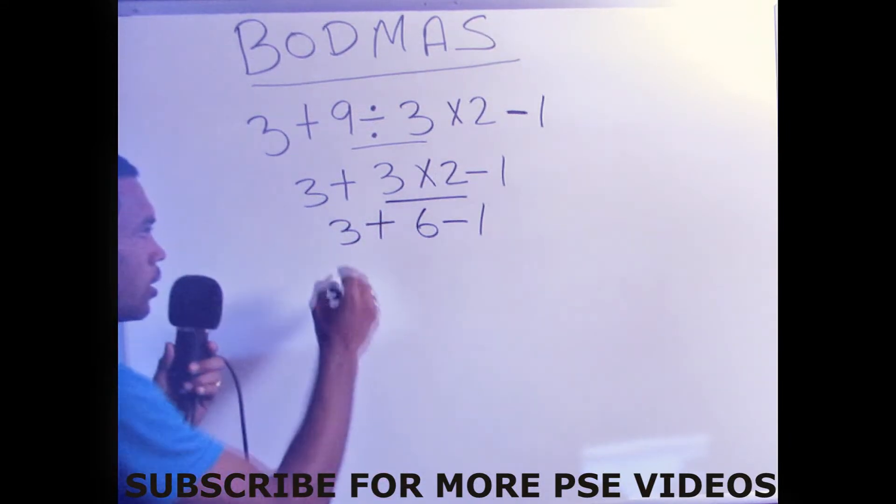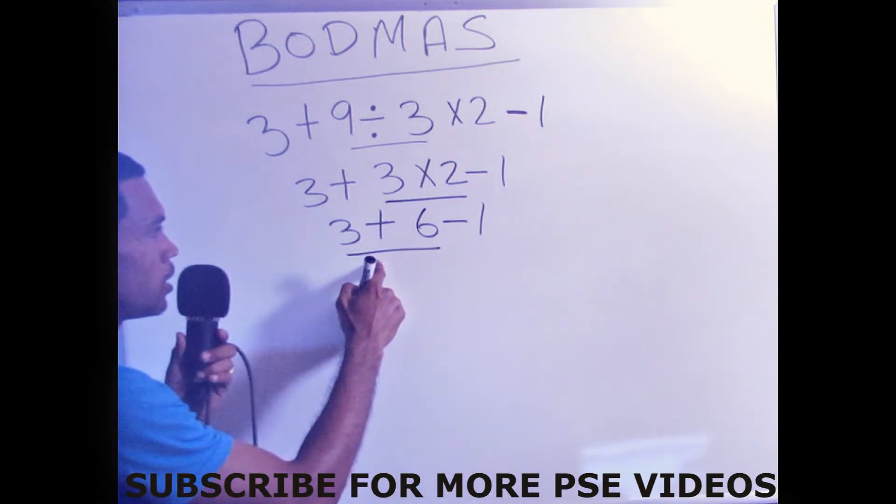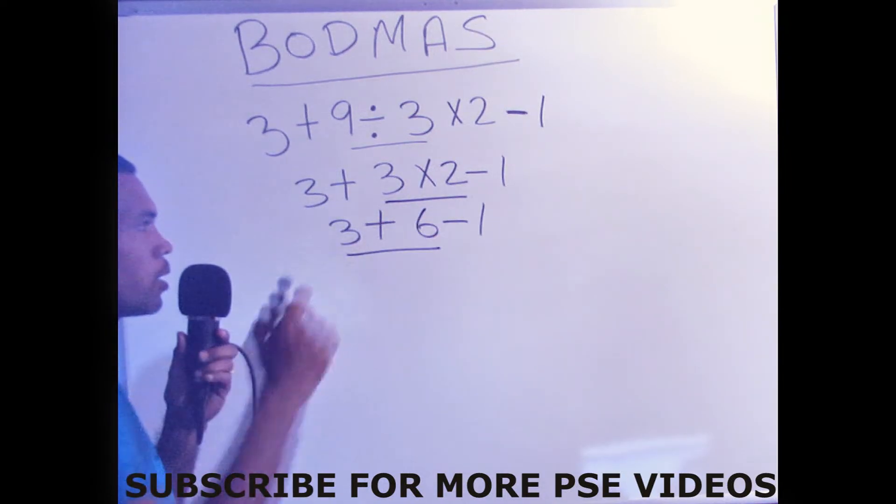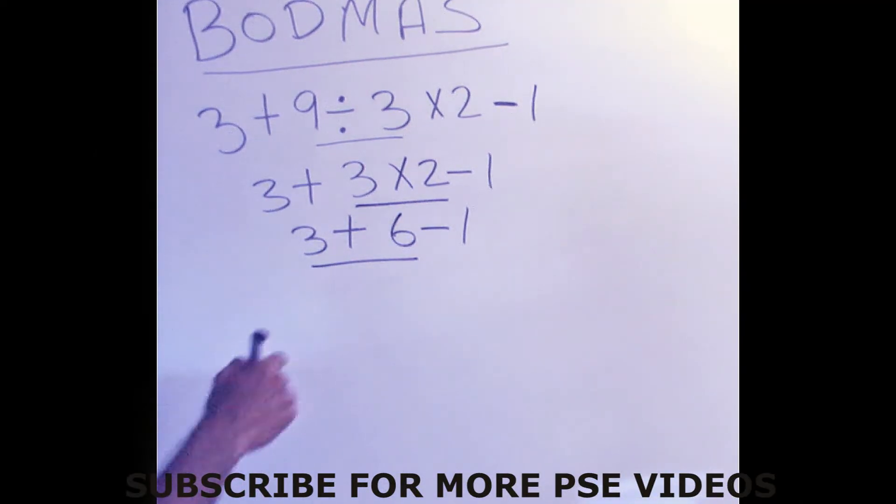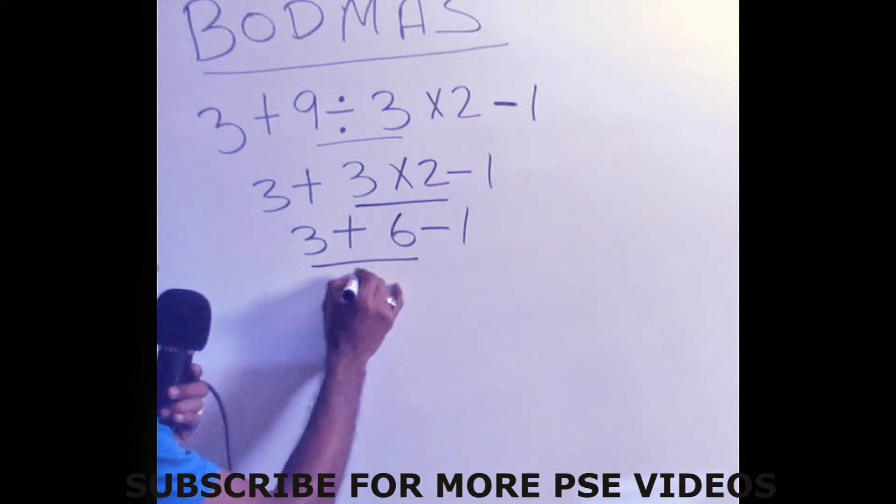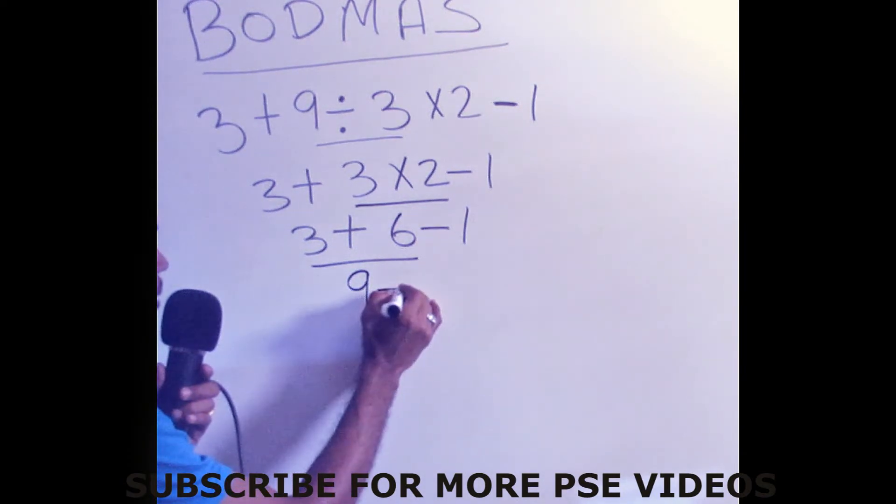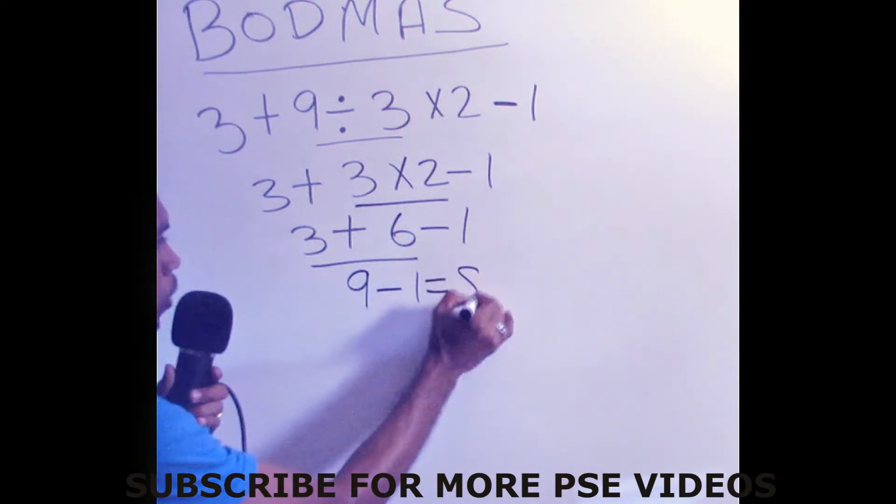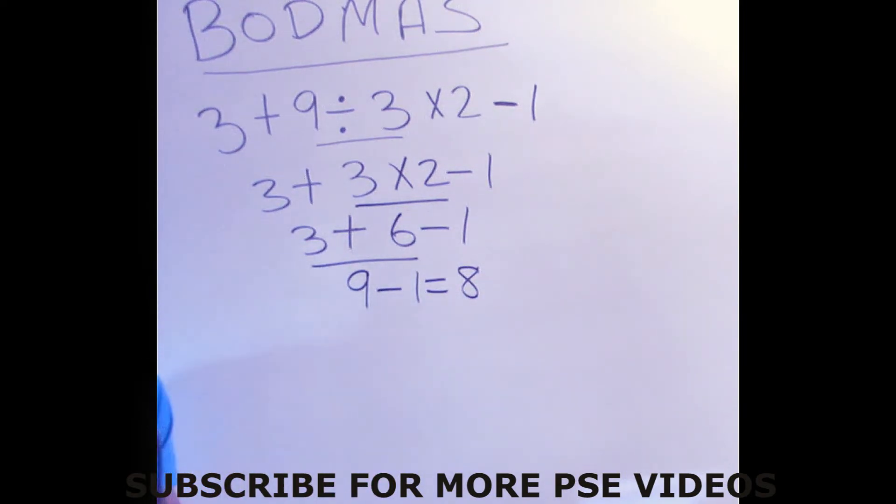We follow the rule. Then we add. Addition in this sense comes before subtraction. So we're going to add, and 6 plus 3 is 9, and 9 minus 1 is equal to 8. And so the problem is solved.